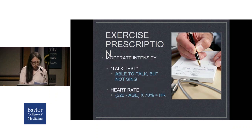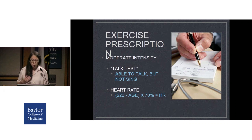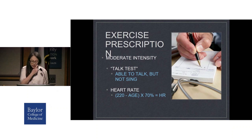What defines moderate intensity? The simplest measure is the talk test — moderate intensity means you are too winded to sing, but not so winded that you cannot talk. A more numeric way to gauge moderate intensity is via heart rate. The CDC defines that as 50% to 70% of your maximal heart rate. Using the formula 220 minus your age, 50% to 70% of that number is your target heart rate zone for moderate intensity.